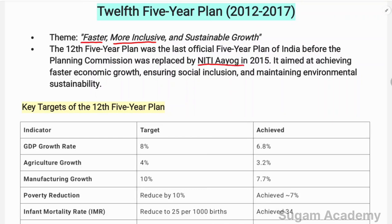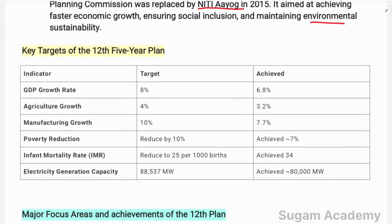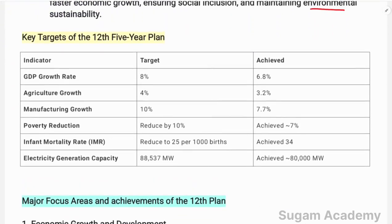The 12th Five Year Plan was the last plan before the Planning Commission was replaced by NITI Aayog in 2015, effective from January 1st. The Planning Commission aimed at achieving faster economic growth, ensuring social inclusion, and maintaining environmental sustainability. These are the three core objectives of the 12th Five Year Plan.